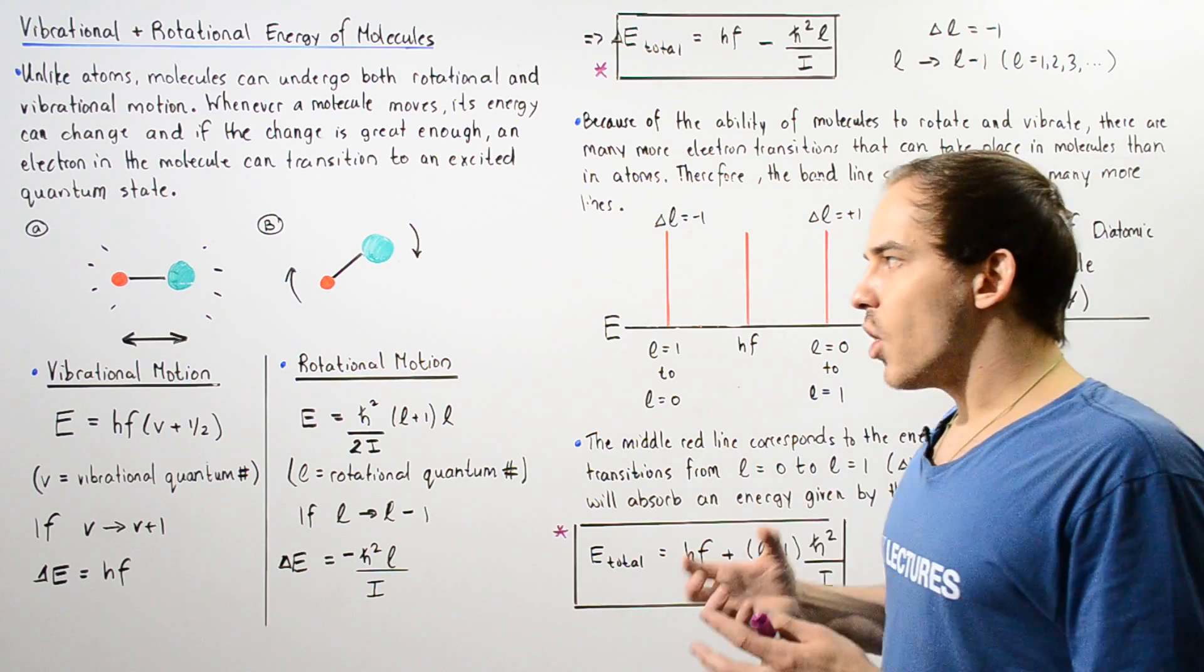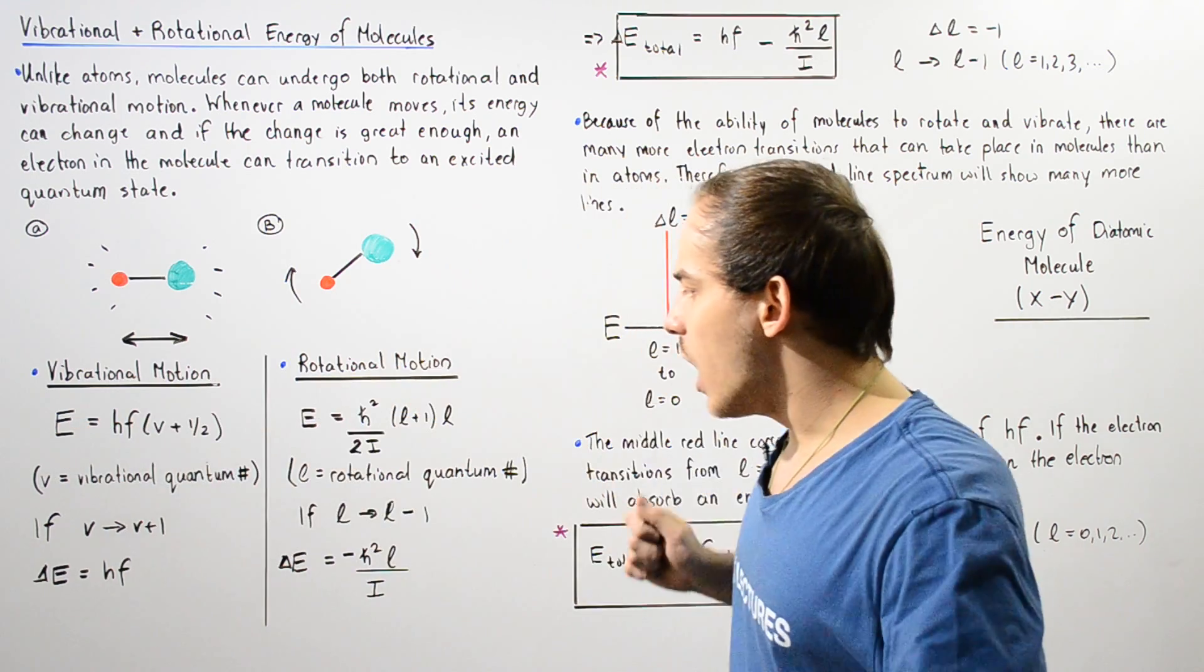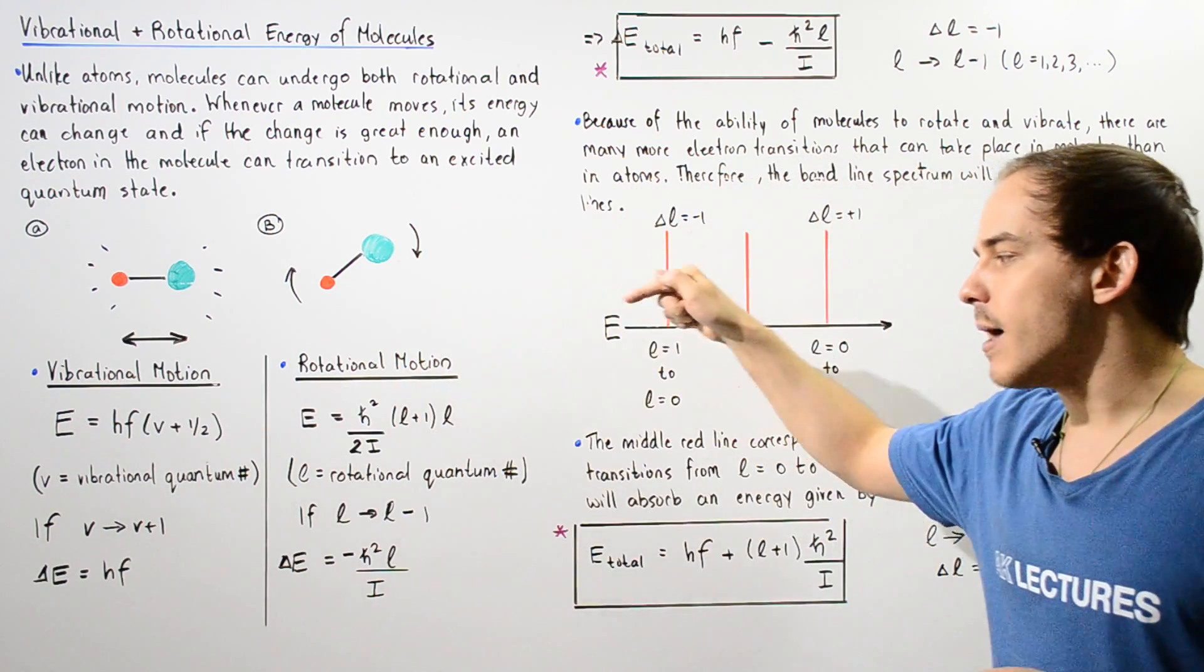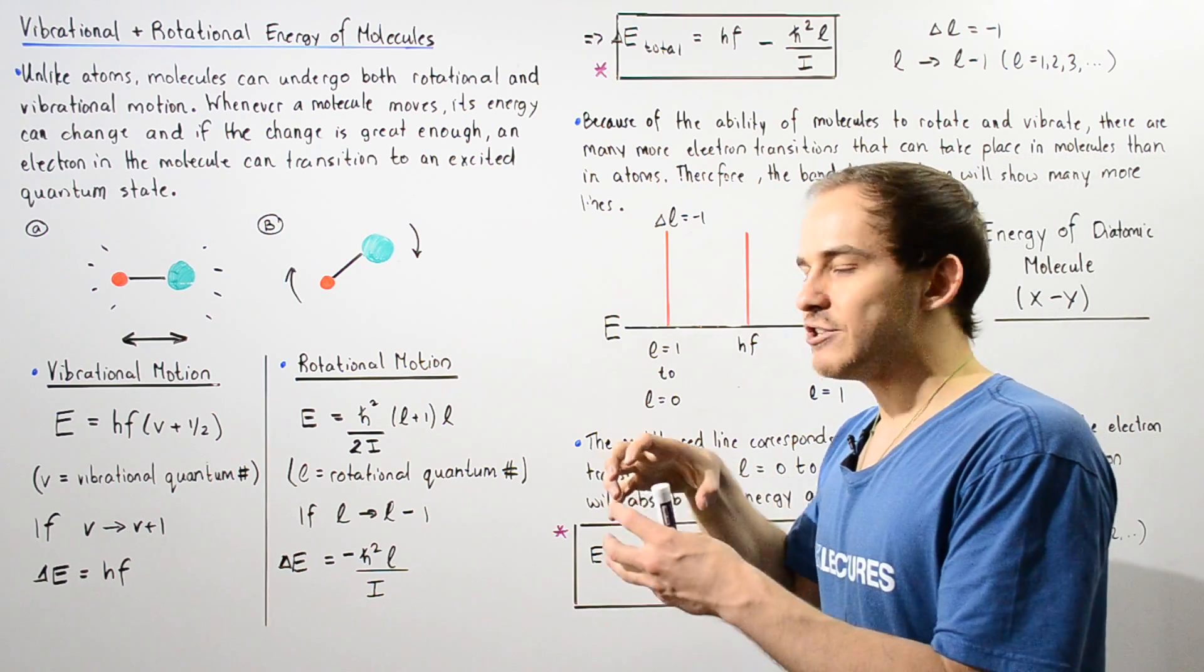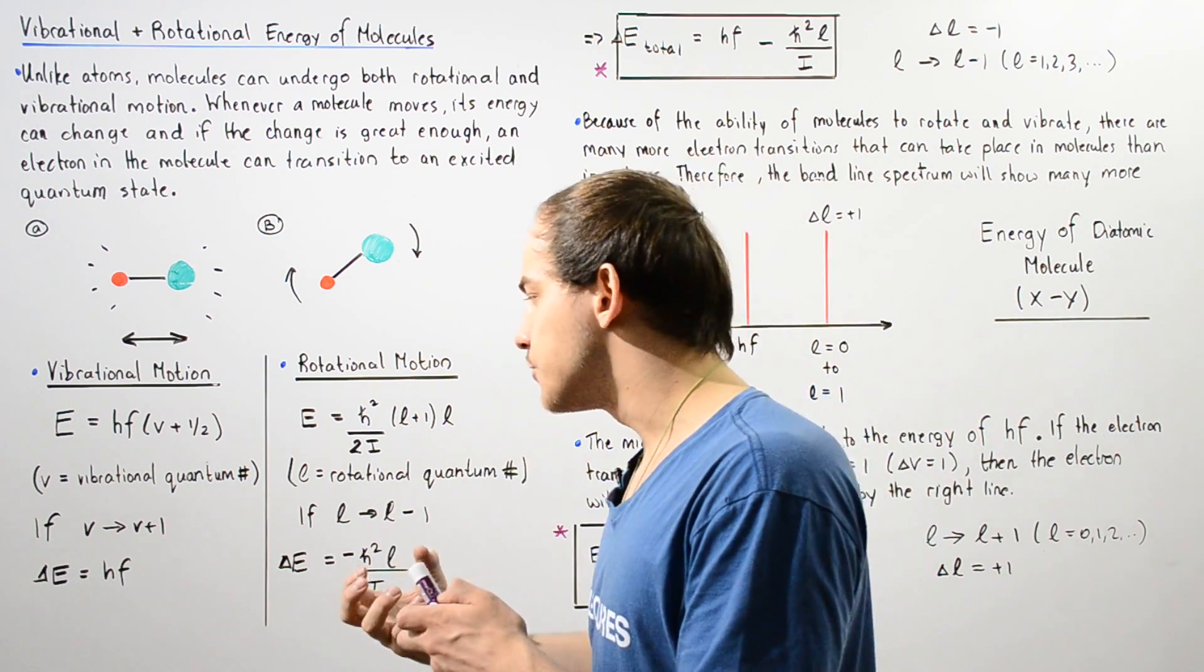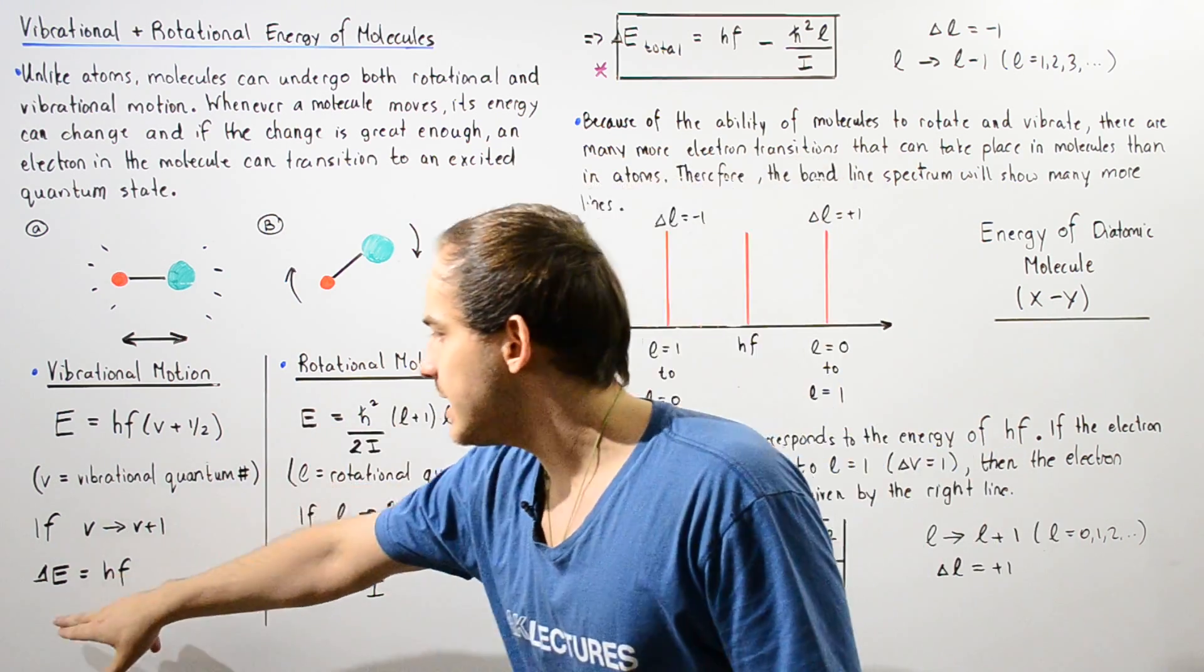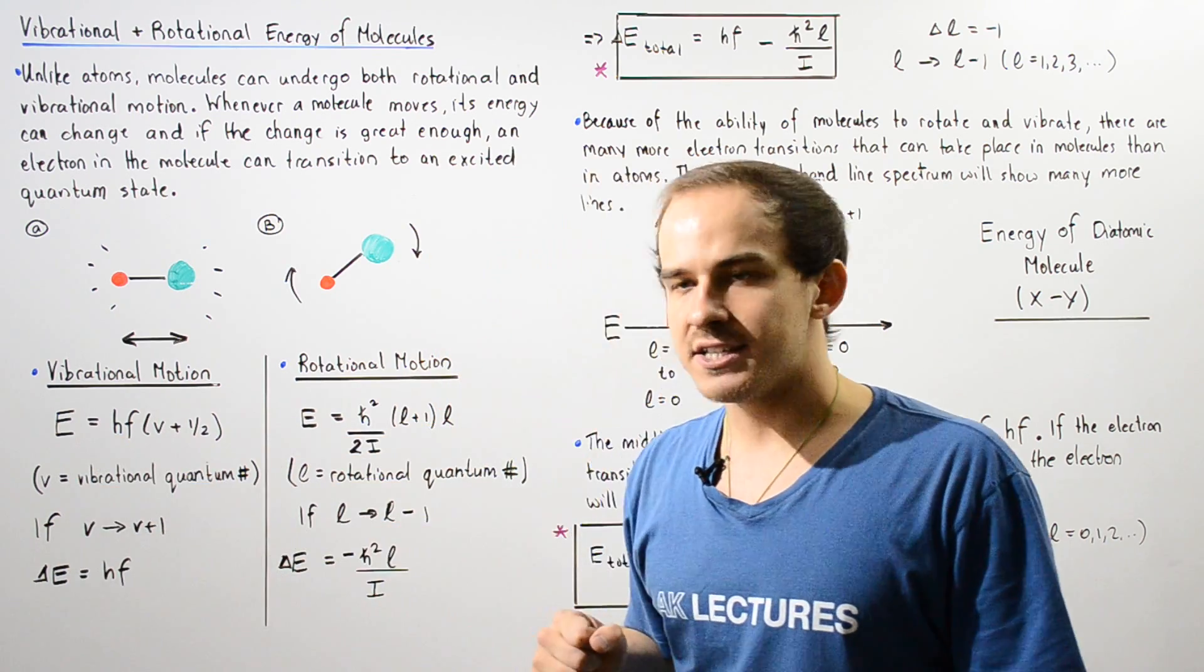Now let's suppose our electron transitions from V to V plus 1 and from L to L minus 1. In such a transition, the electron is said to gain energy. And if we use these conditions and these equations, we see that for such a transition,